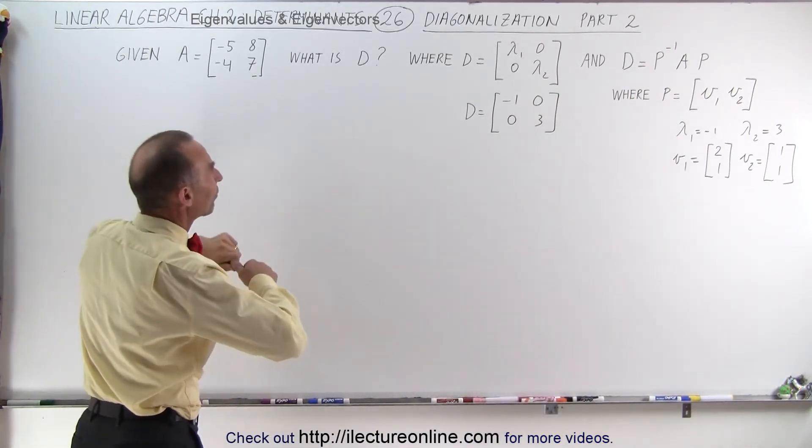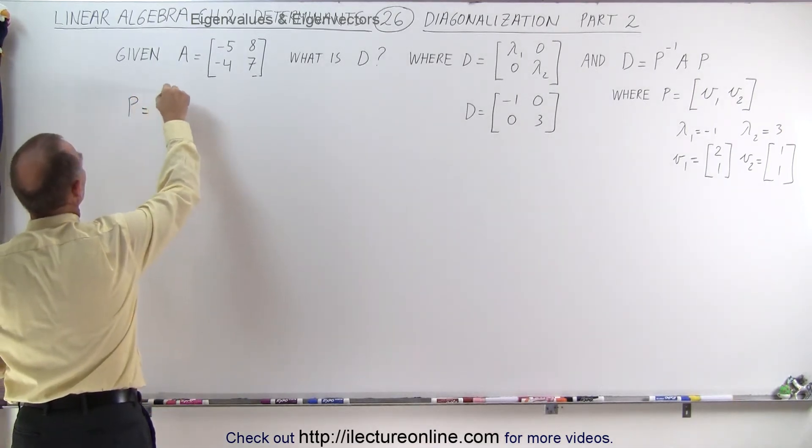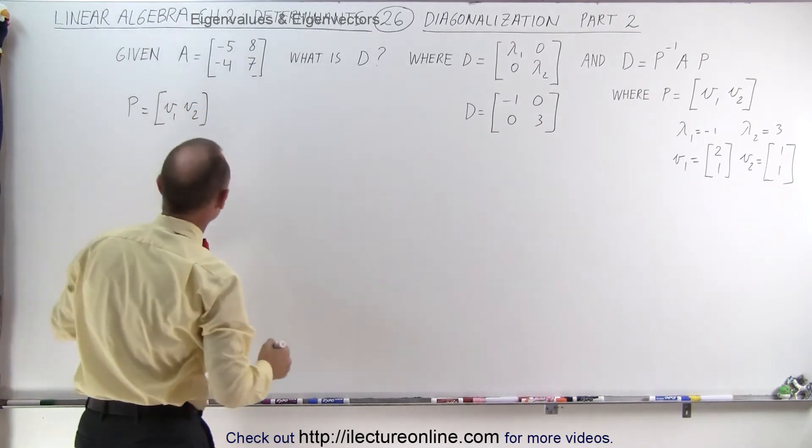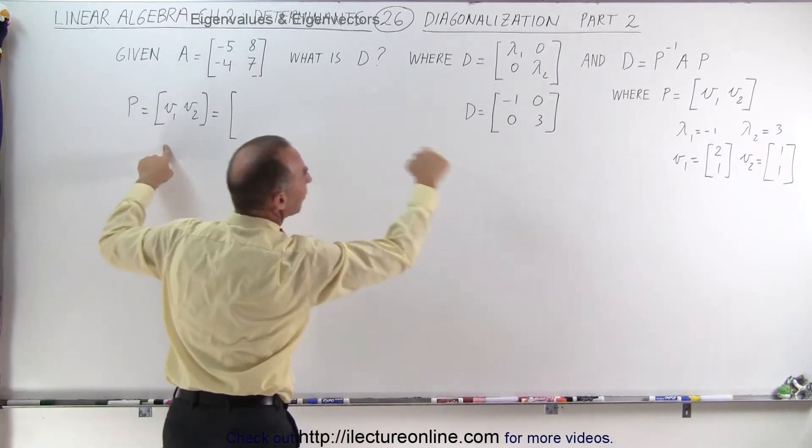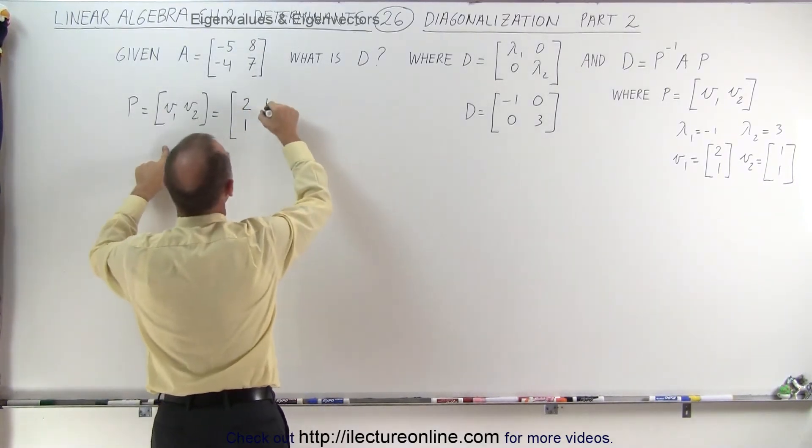So first of all let's find the P matrix. The P matrix is equal to the two eigenvectors, which means that this is equal to V1 from the previous video was [2, 1], V2 is [1, 1].